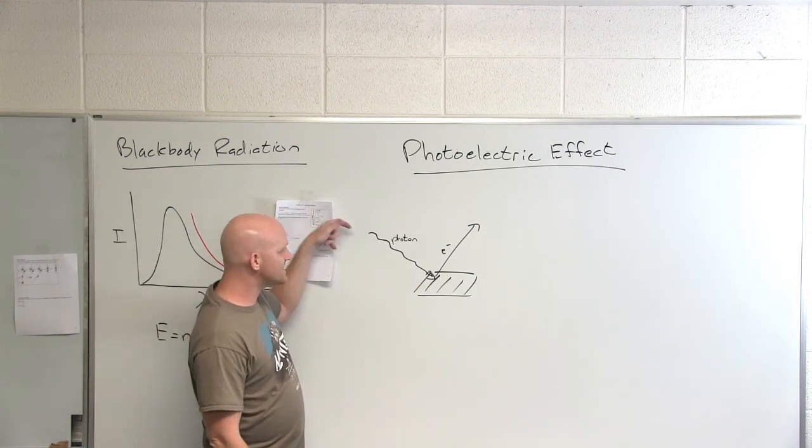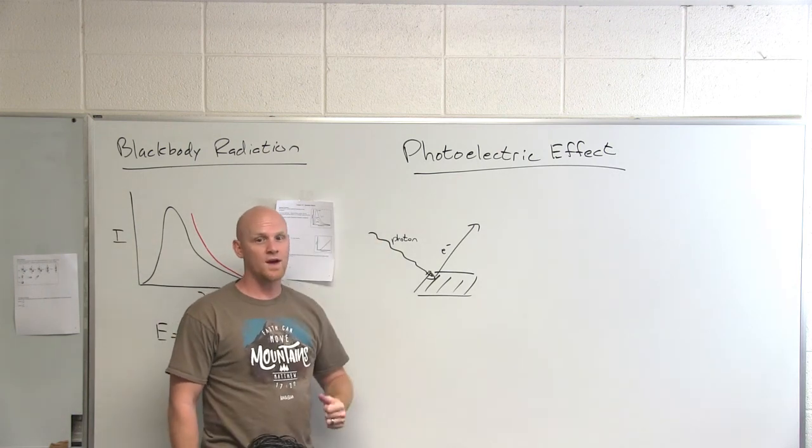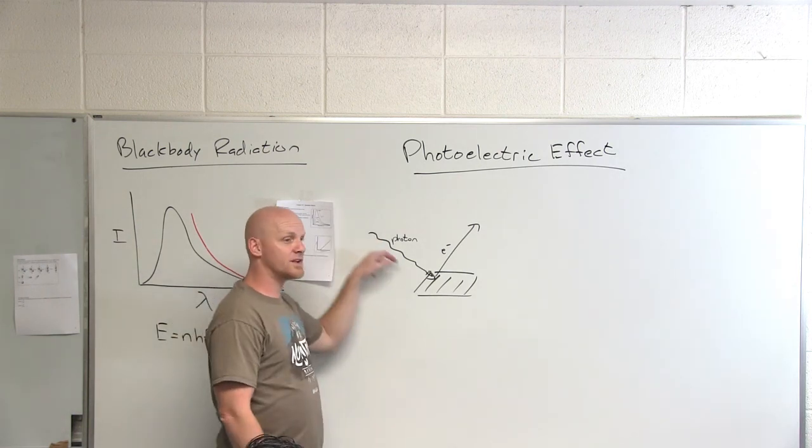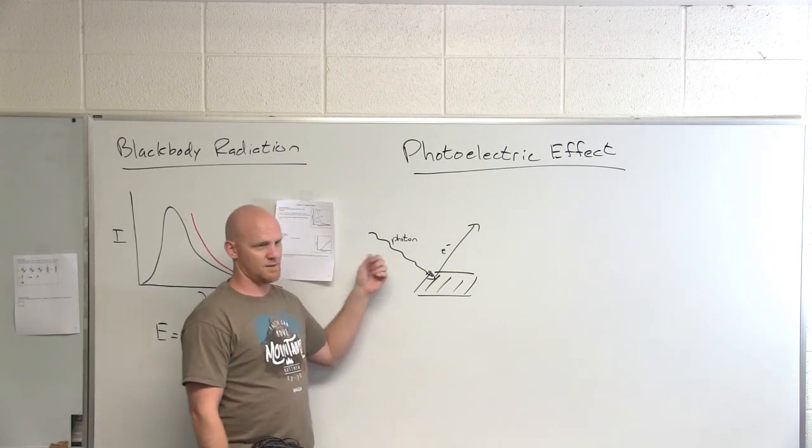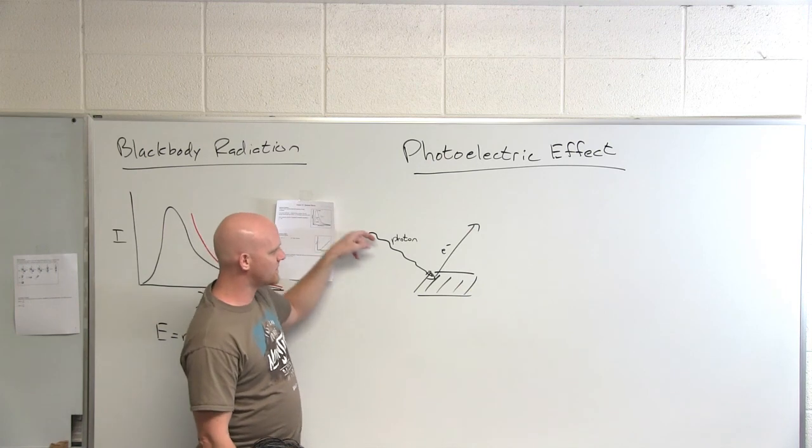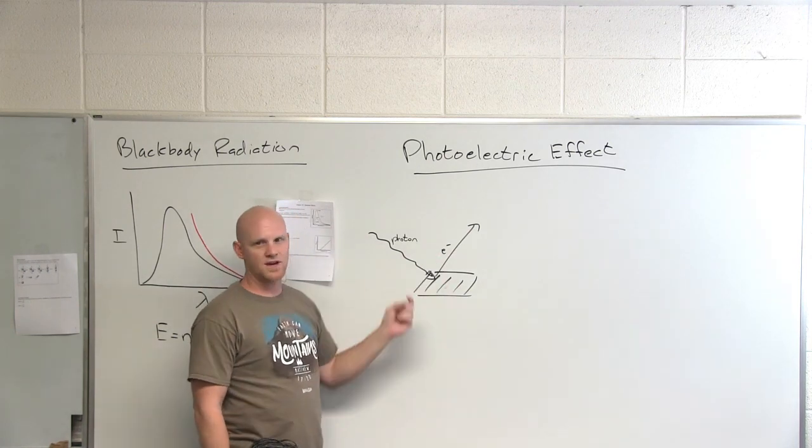When you increase the intensity of the beam, you're not actually increasing the amplitude of the wave, you're just increasing the number of green photons or blue photons or red photons that are in your light beam. If you use green light, the more intense the beam, the more electrons would get ejected.